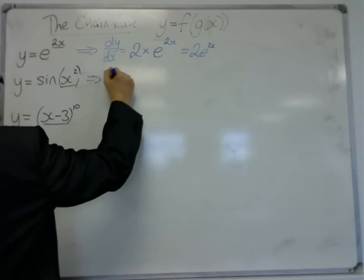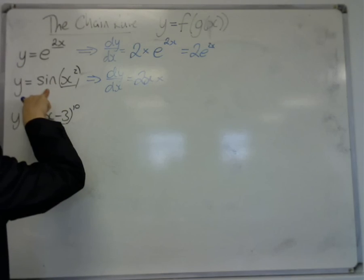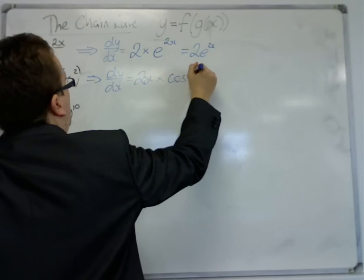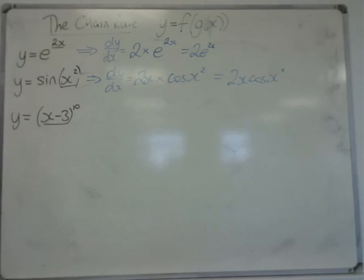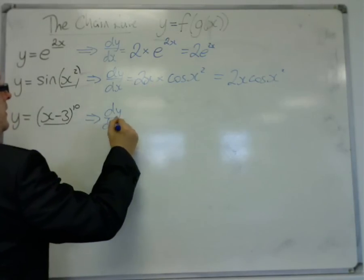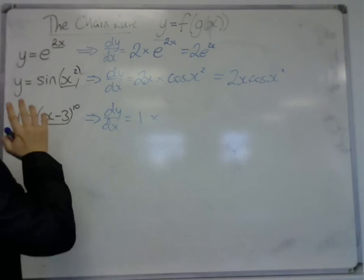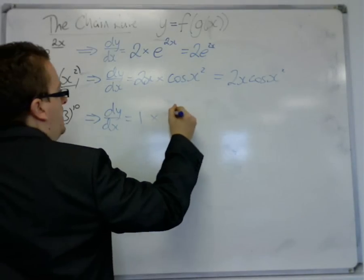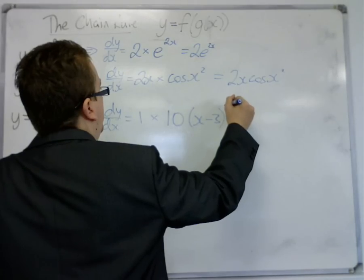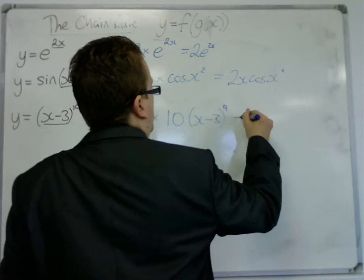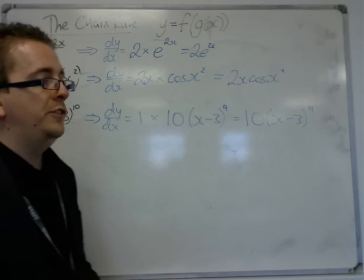This example, I look at the first derivative of what's inside, that comes out to the front. Sine would differentiate to cosine, and what's inside remains the same. So that's 2x cos(x squared). Last one, dy/dx is equal to, well, I look at the derivative of what's inside, that's 1. Something to the power of 10 would differentiate to be 10, and what is inside stays the same to the power of 9. So this is 10(x minus 3) to the power of 9. As you become more confident, you'll be able to do these straight off like this.